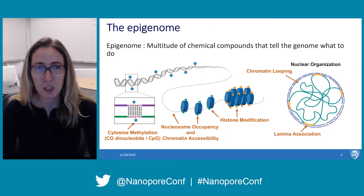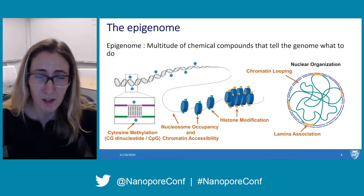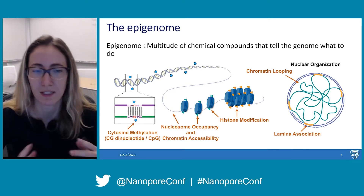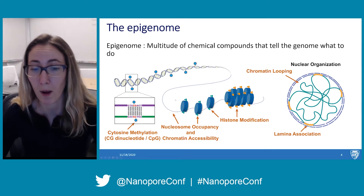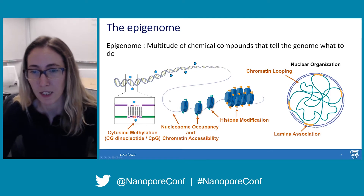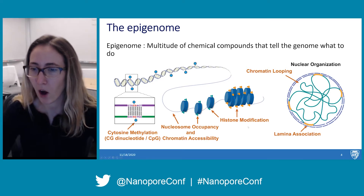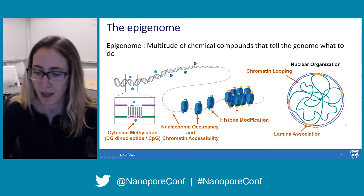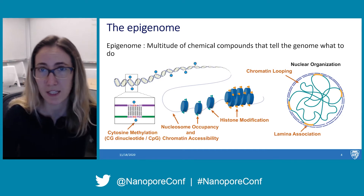But DNA CpG methylation is just one component that makes up the epigenome, which is a complex system made up of a multitude of chemical compounds that tell the genome what to do. This includes DNA CpG methylation, nucleosome occupancy and chromatin accessibility, histone modifications, and protein binding events — all of which make up the higher order structure of how DNA is organized in the nucleus and influences gene expression.